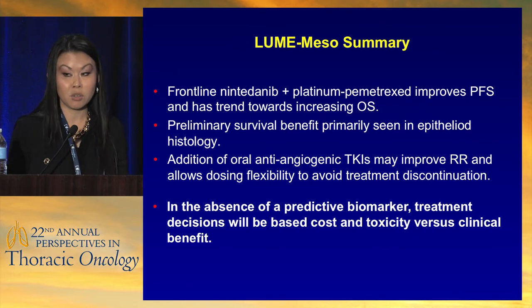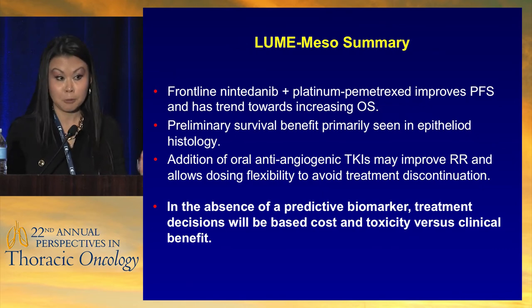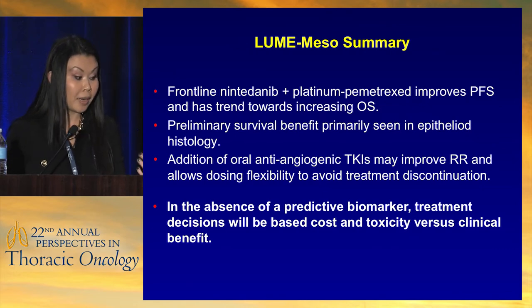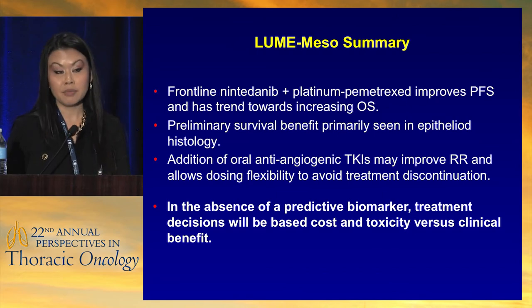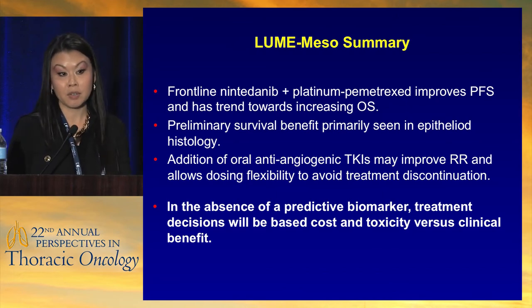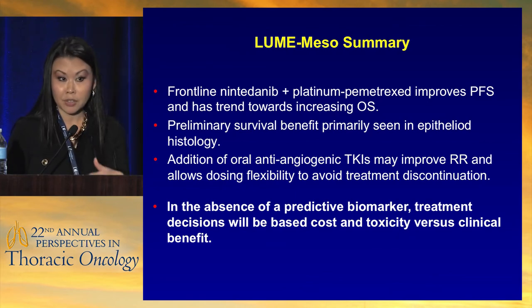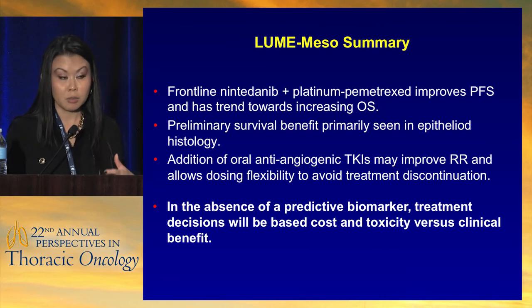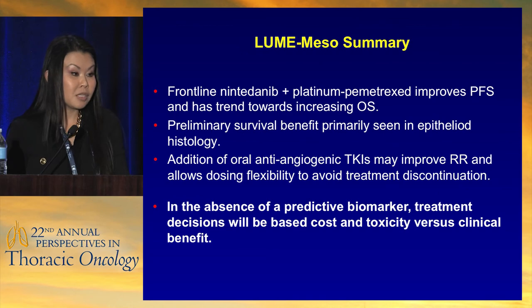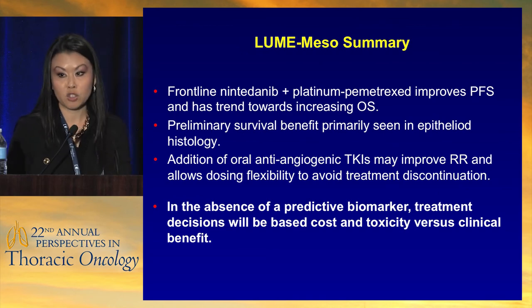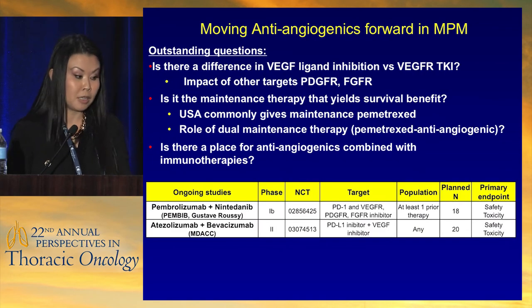This is partly why histologic subtype knowledge matters in clinical practice: if nintedanib gets approved, it can probably only be given to epithelioid patients based on trial design. There is currently no predictive biomarker for any anti-angiogenic, which is a challenge. In the absence of such a biomarker, regulatory approval will likely be for any epithelioid mesothelioma patient.